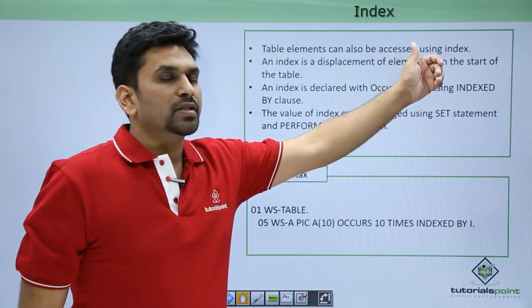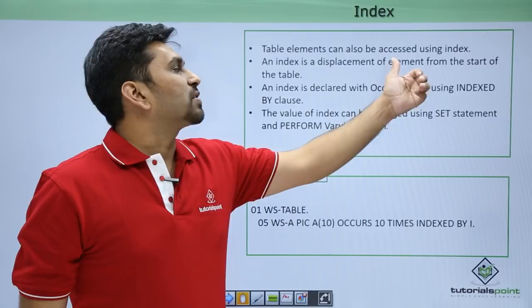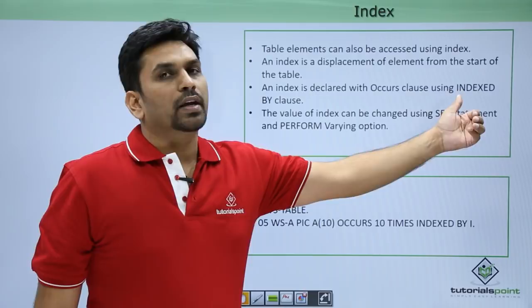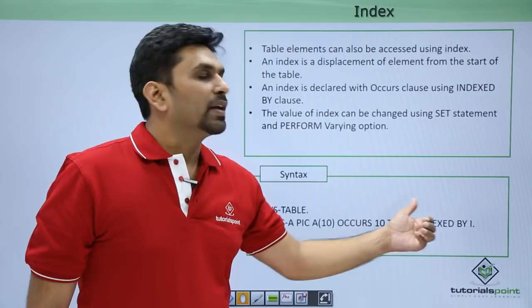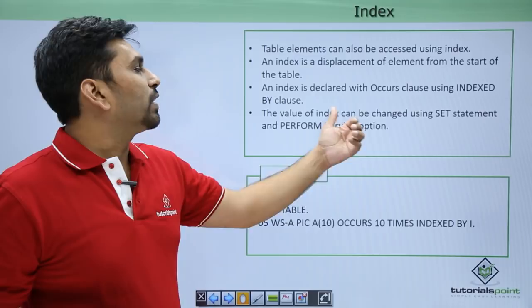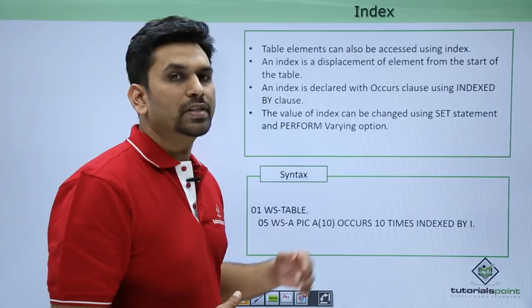Table elements can also be accessed using an index. Unlike subscript, index requires a declaration. An index is a displacement of an element from the start of the table. It is declared with the OCCURS clause using the INDEX BY phrase — for example, WS-A PIC A(10) OCCURS 10 TIMES INDEX BY I. The value of the index can be changed using the SET statement or PERFORM VARYING.